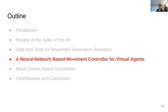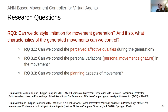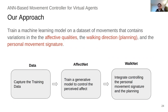Next, we are going to talk about our neural network-based movement controller for virtual agents. With our third research question, we asked whether we can do style imitation for movement generation. We further break down this question into three sub-questions: whether we can control the perceived affective qualities, whether we can control the personal variations of the movement, and whether we can control the planning aspects of movement. To address RQ3, we train a machine learning model on a dataset of movements that contain such variations, allowing the affective qualities, the walking direction as a representation of planning, and personal movement signature. We start by capturing the training data. In our first iteration, we train the model to control the perceived affective qualities, and in the second iteration, we complete that model by integrating controlling personal movement signature as well as planning.